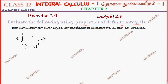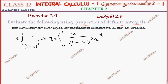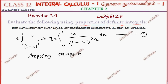So this is one property to apply. Question number 1. I equal to integral 0 to 1, x by (1 minus x) whole power 3 by 4 dx. This is one. If applying properties.